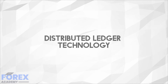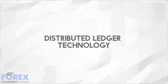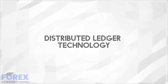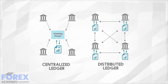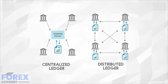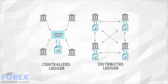Distributed ledger technology, or DLT as some people may call it, is a database of records that aren't stored or confirmed by a central body. This database is then spread across several nodes. Each node saves an identical copy of the ledger, therefore making it decentralized.